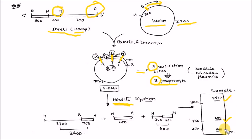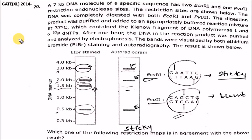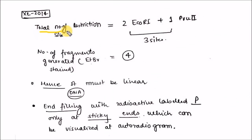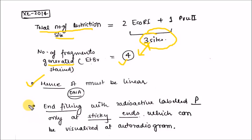This question came in the GATE Life Sciences paper 2014. In the EtBr stained gel you are getting four bands, and in the autoradiogram you are getting three bands. EcoRI is a sticky-end restriction enzyme and PvuII is a blunt-end enzyme. There are a total of three restriction sites — two EcoRI and one PvuII. Since the number of fragments is four — one more than the number of restriction sites — this must be a linear DNA. End-filling with radioactively labeled phosphate only occurs at sticky ends.